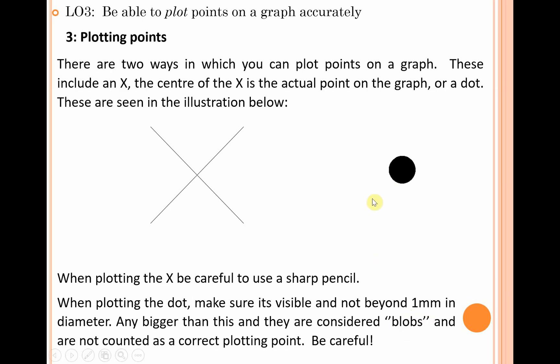Those blobs are not counted as sufficient plotting points. They're going over too much of the graph, and as a result, if those circles are too big—they're blobs—you lose all the marks in relation to your plotting points. Most graphs typically have got two marks for your plotting points, so you don't want to be losing them. Please do be careful: well-sharpened pencil, don't make the diameter too big, but you do want to make it big enough that it's obvious and can be seen by the examiner.